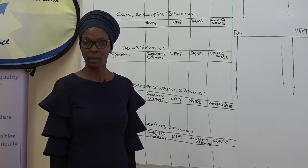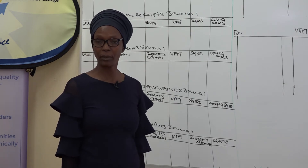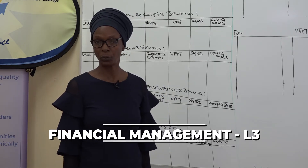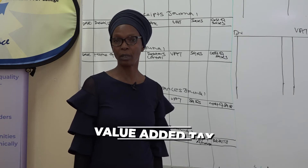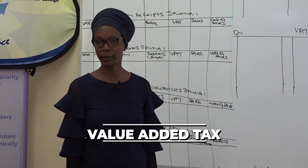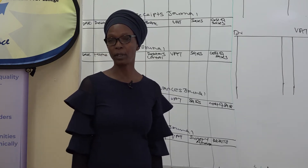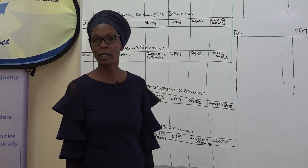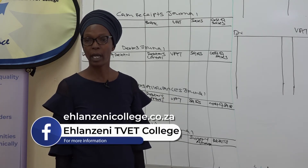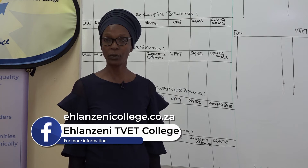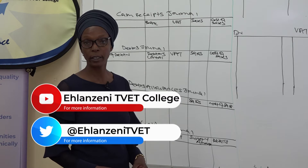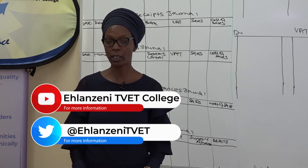Welcome students to our Financial Management Level 3 lesson. We are in lesson 2, the continuation of lesson 1. We have explained the value added tax as an indirect tax that is levied on all goods and services, and we have calculated it using the two formulas: the inclusive formula and the exclusive formula.